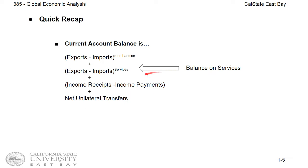The second entry in the current account is the balance on service, or trade balance on service, which is very similar to the trade balance on goods. The trade balance on service is equal to the export of service — how much service we sell to another country — minus how much service we purchase from another country.